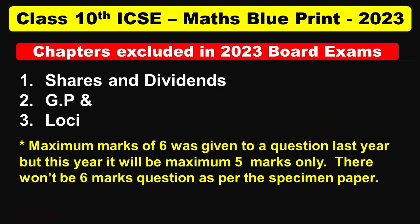Please note: Shares and Dividends, Loci, and Geometric Progression chapters were not included in the last year's math syllabus due to the post-COVID scenario. Also, a maximum of 6 marks were allotted to a question last year, and this year it will be a maximum of 5 marks per question.